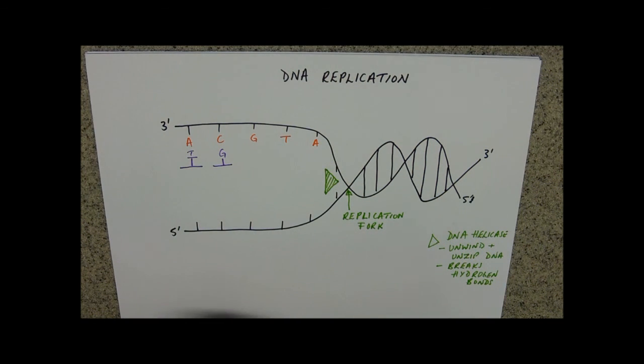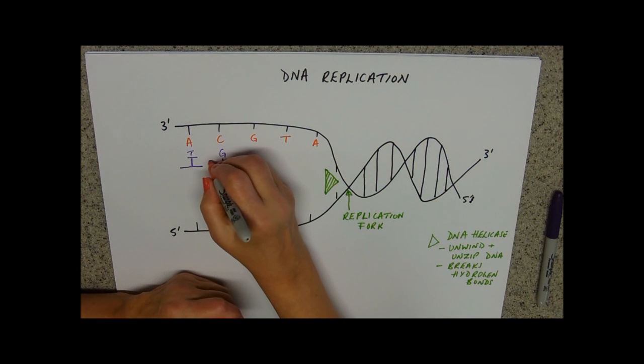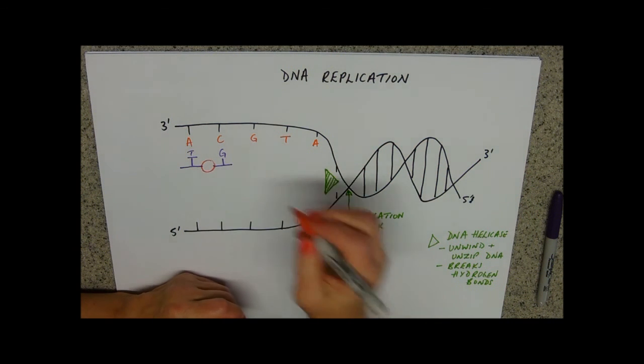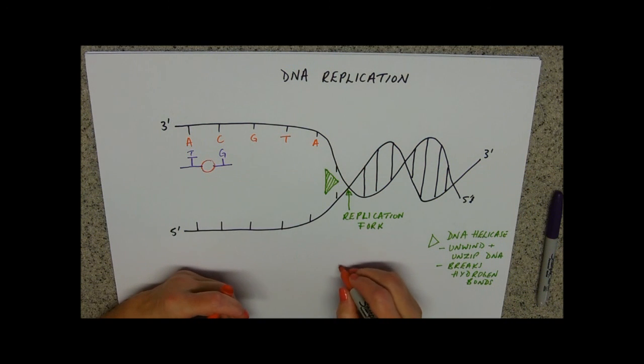And then we need to join them together. So we have another enzyme, I'll do this little red circle and our red circle one is DNA polymerase.